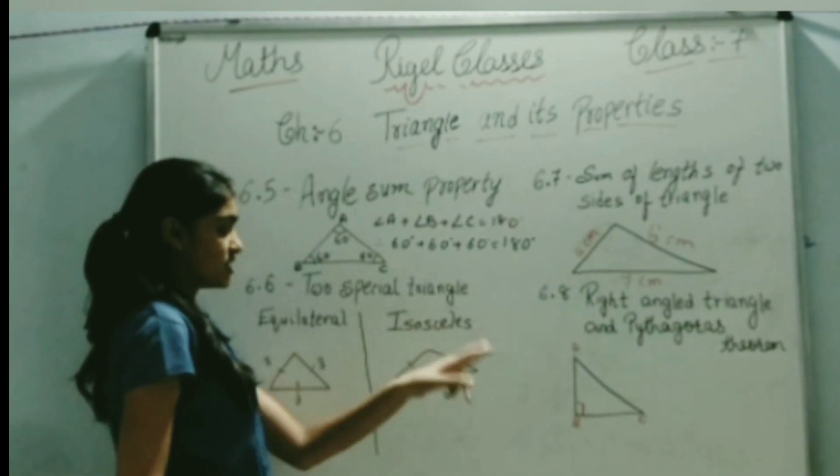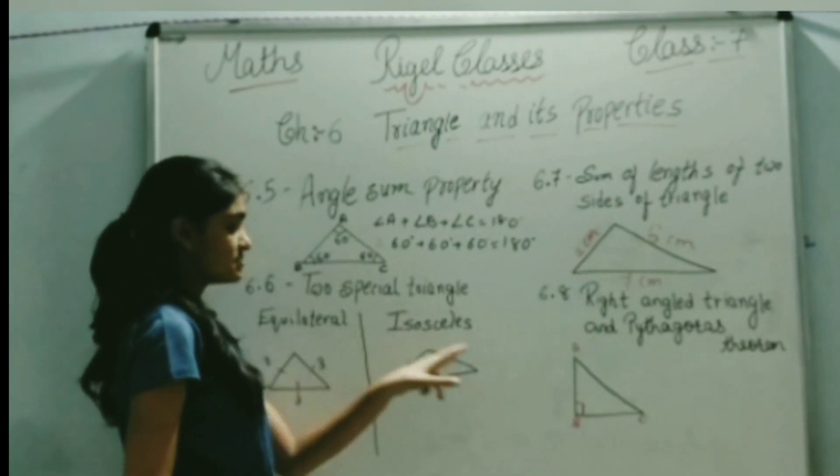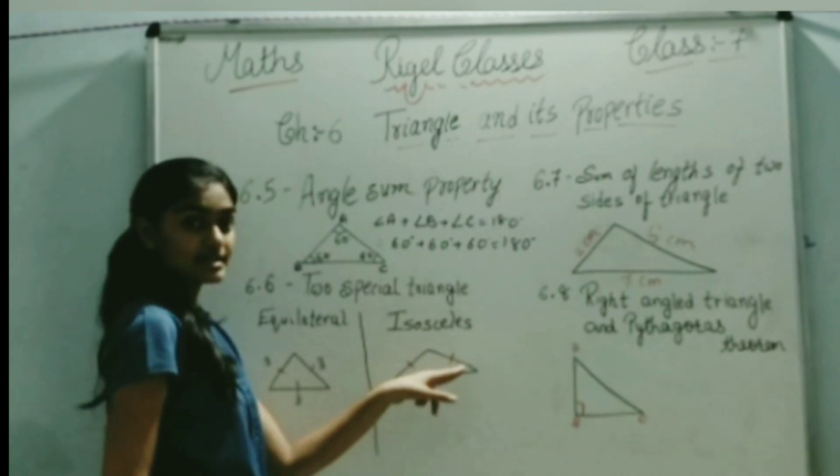Next is the isosceles triangle. An isosceles triangle has two sides the same. As you can see here, it is indicated by a line.